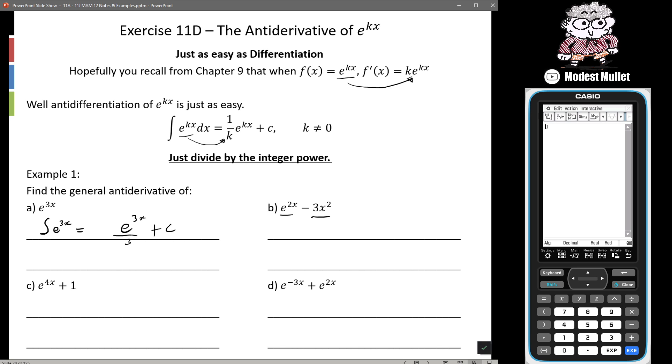Next example we have two terms separated by subtraction so we could say e to the 2x minus 3x squared. And I've left out here we are assuming that we're finding the derivative with respect to x. We can say that is equal to the derivative of e to the 2x minus 3x squared dx.